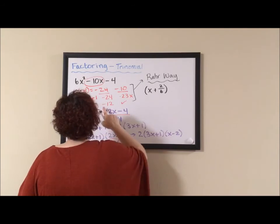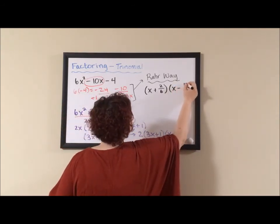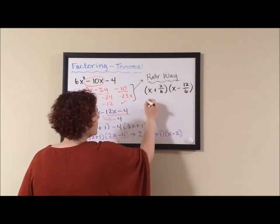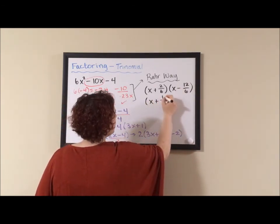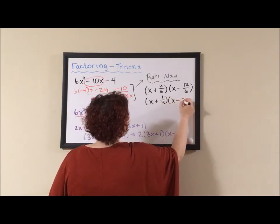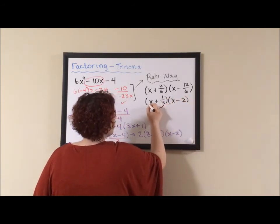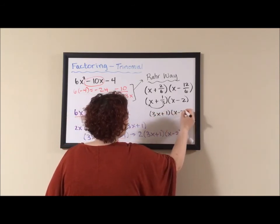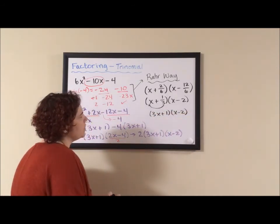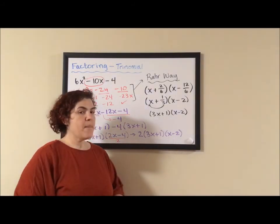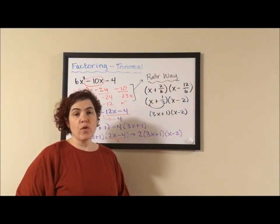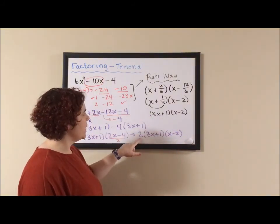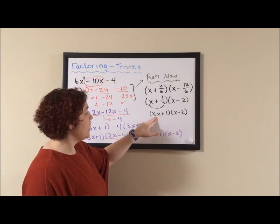And x minus 12 over 6. I need to reduce my fractions. So this becomes x plus 1 third and x minus 2. And then this 3 comes out front. So 3x plus 1 and x minus 2. I mentioned in another video that the one problem with the RAR way is because we are reducing fractions, it's really easy to lose your greatest common factor. So the last step is to double check.